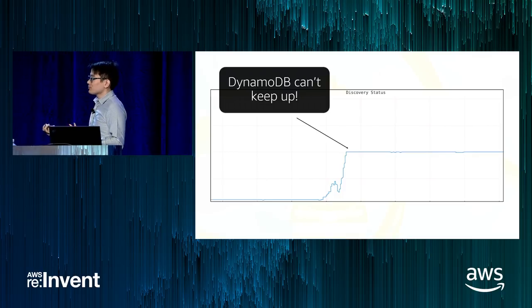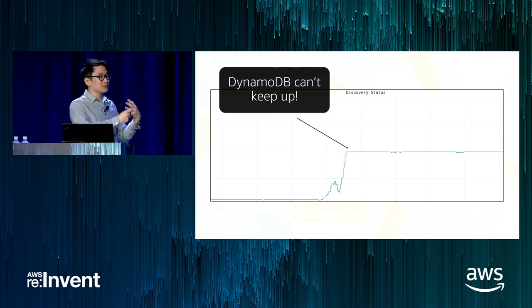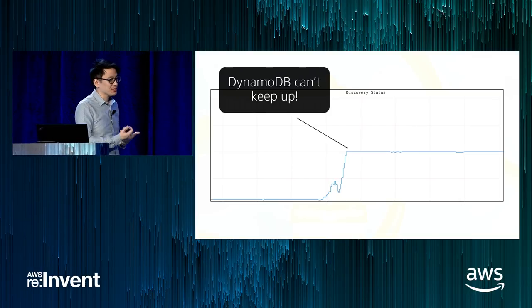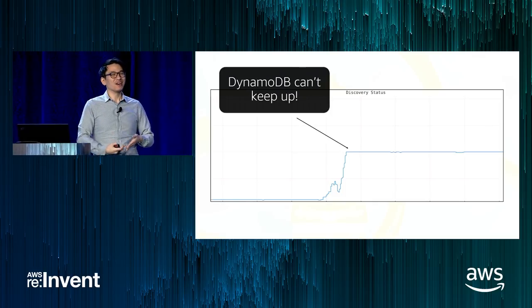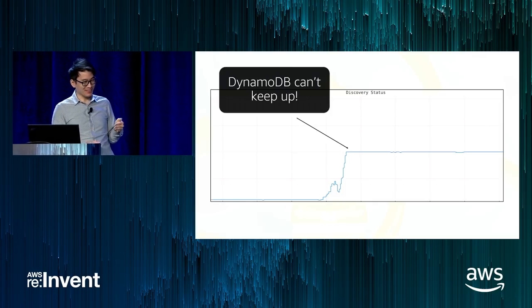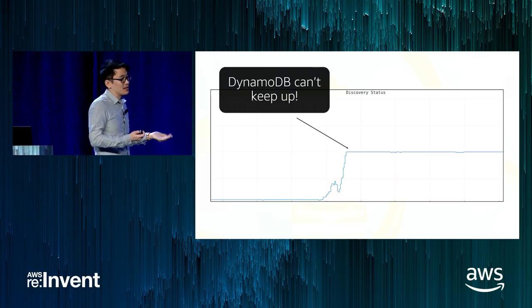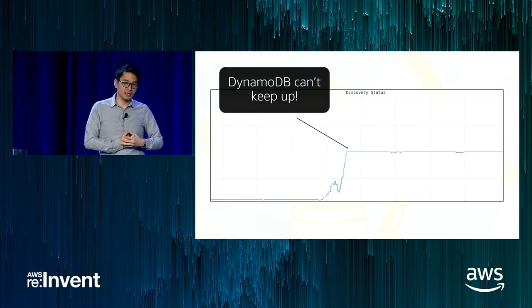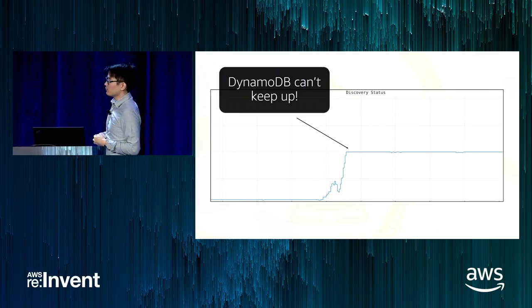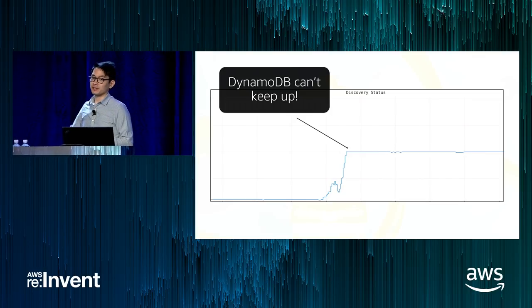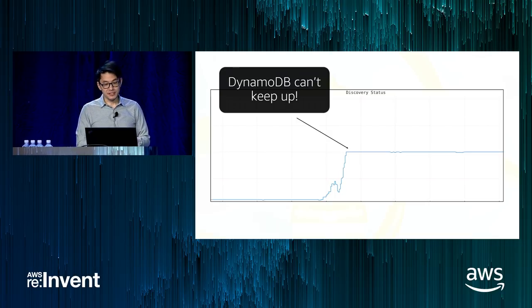To solve this, we ultimately just pinned the read units super high to get enough capacity, which is not great. Fortunately, since then DynamoDB has landed autoscaling for reads and writes — so you can just check that box and as your read usage goes up, it will scale your needed capacity automatically.